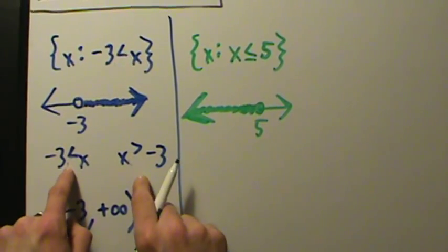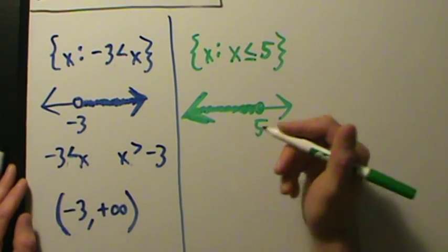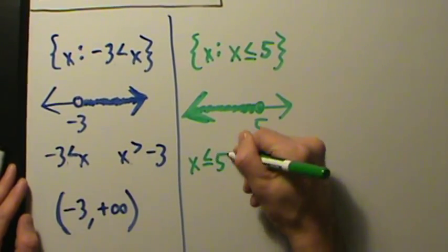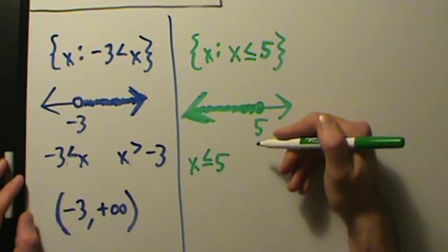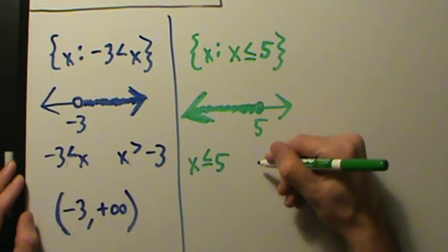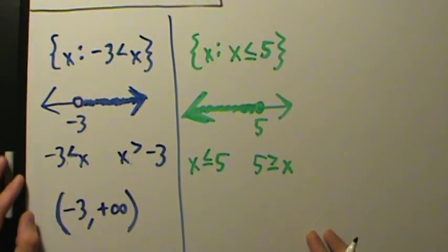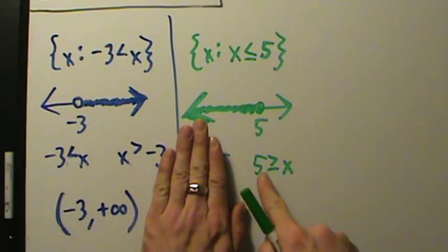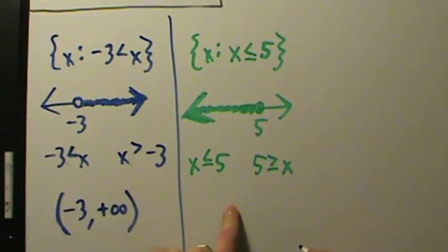Just like before, we can describe this interval two different ways with inequality notation: we could say 'x is less than or equal to 5,' or we could say '5 is greater than or equal to x.' Either one is totally acceptable.